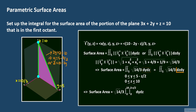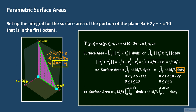Switching the order so that z is integrated first, z goes from 0 on the y-axis to 10 minus 2y on the trace. The minimum value of y is 0 and the maximum is 5 at the y-intercept. This gives the final double integral for the surface area. The viewer can verify that these two integrals are also equal to 25 times the square root of 14, all over 3.